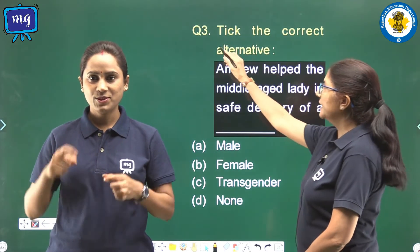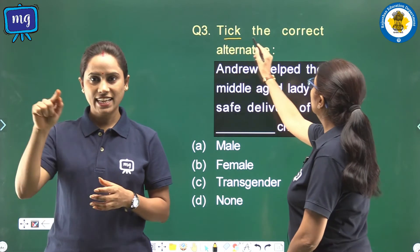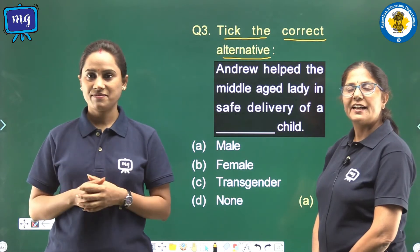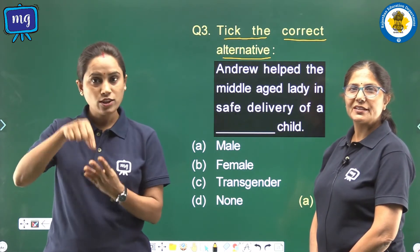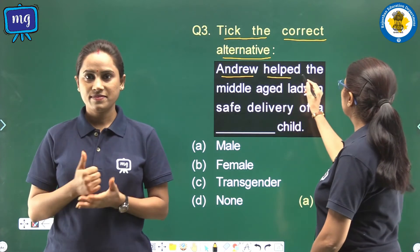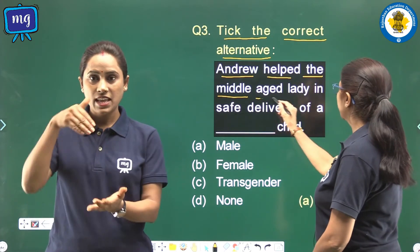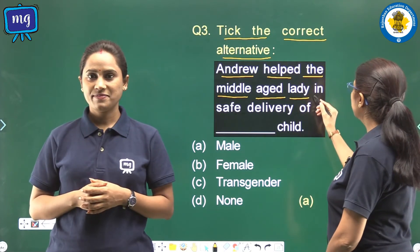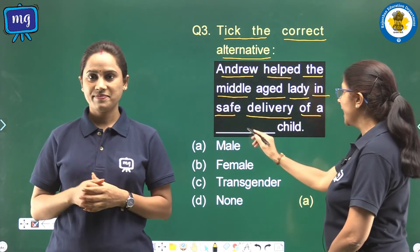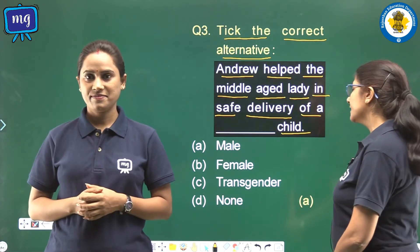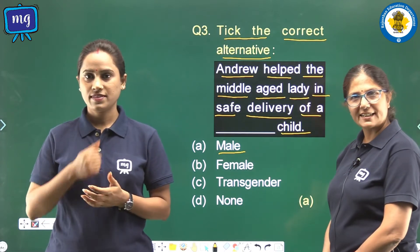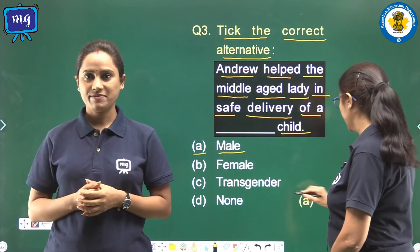Question number 3: Take the correct alternative. Children, in this question you will choose a correct option. Andrew helped the middle-aged lady in the safe delivery of a blank child. The correct answer is male, so we shall write A in the bracket.